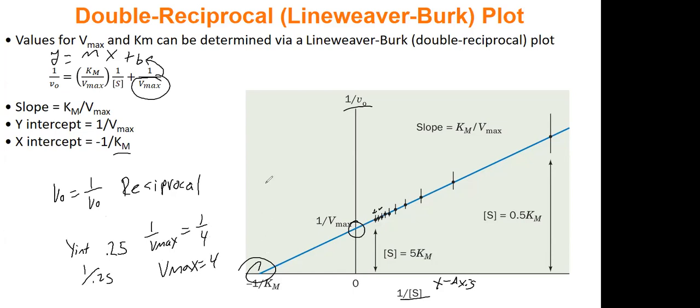For Km, let's say you got negative five as your X intercept. Well, to get Km, you do negative one over negative five, which is 0.2. So Km always positive.